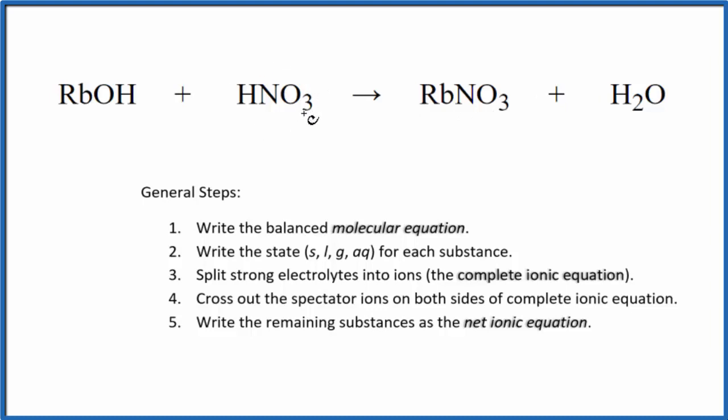HNO3, that's nitric acid, and then rubidium hydroxide. You see a metal and the OH, the hydroxide, that's a base. So metal, base, give us salt, water. This is neutralization.